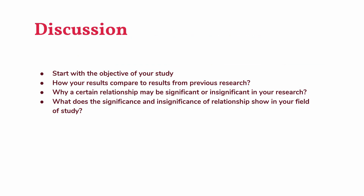An important thing is discussing your results. Some research that students come up with does not include a discussion — without discussion, there is no research. Start your discussion by identifying the objective of your study. The second step is how your results compare to the results of previous research. If you have documented your literature, this will be very easy — that is the reason we strongly recommend documenting your literature in an Excel sheet. Why certain relationships may be significant or insignificant? What does the significance or insignificance of the relationship show in your field of study?